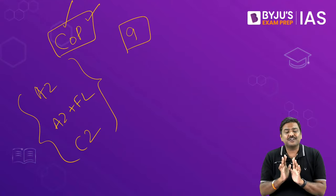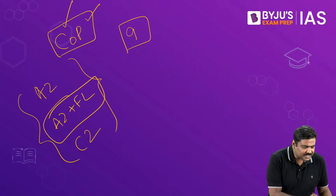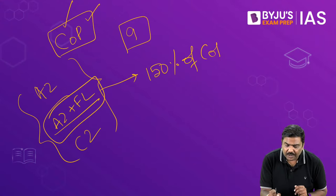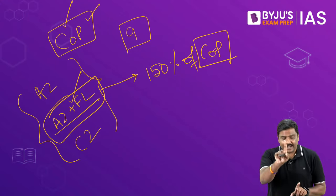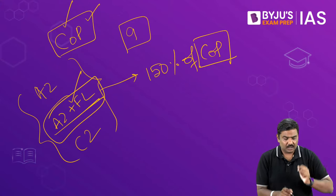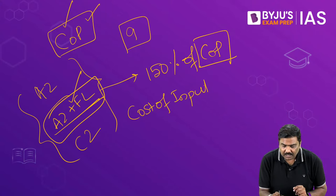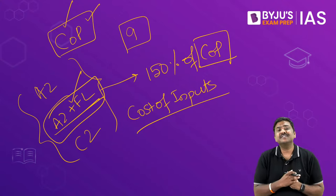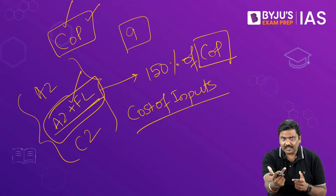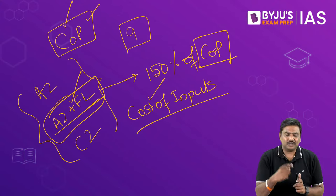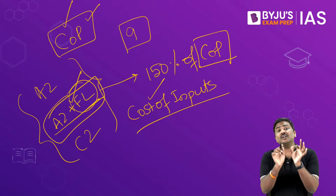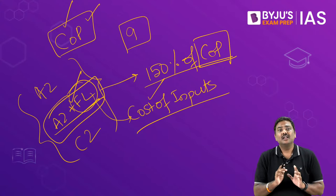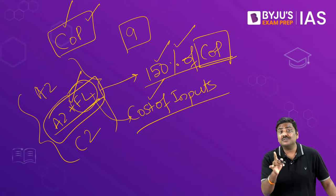Out of the nine types, the one you simply need to remember is A2+FL. Whenever the government announces MSP as 150% of cost of production, the cost of production considered is A2+FL. What is A2+FL? Whatever is the cost of inputs incurred by the farmer — such as fertilizers, insecticides, labour, irrigation — all these are considered. In addition, the imputed cost of family labour (FL) is also included. It is this A2+FL based on which the Government of India announces the MSP.